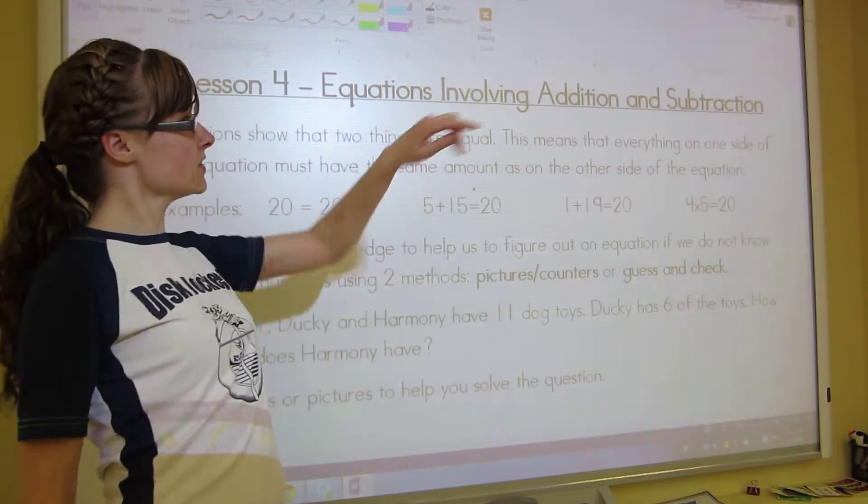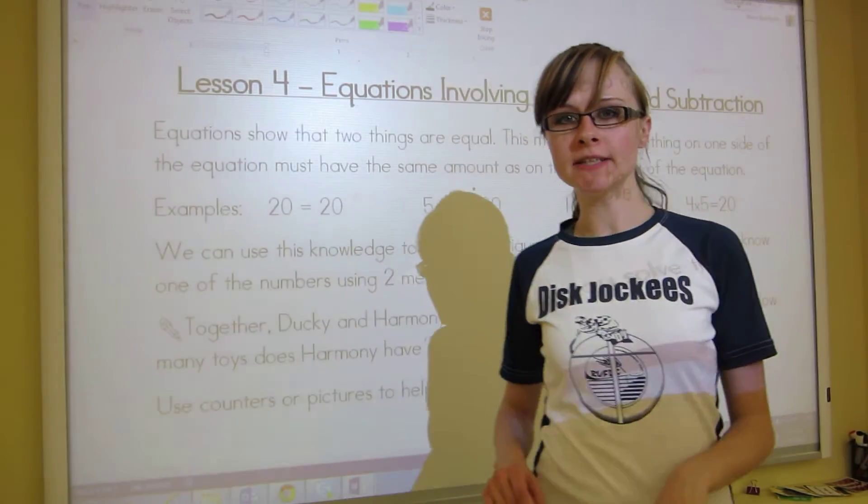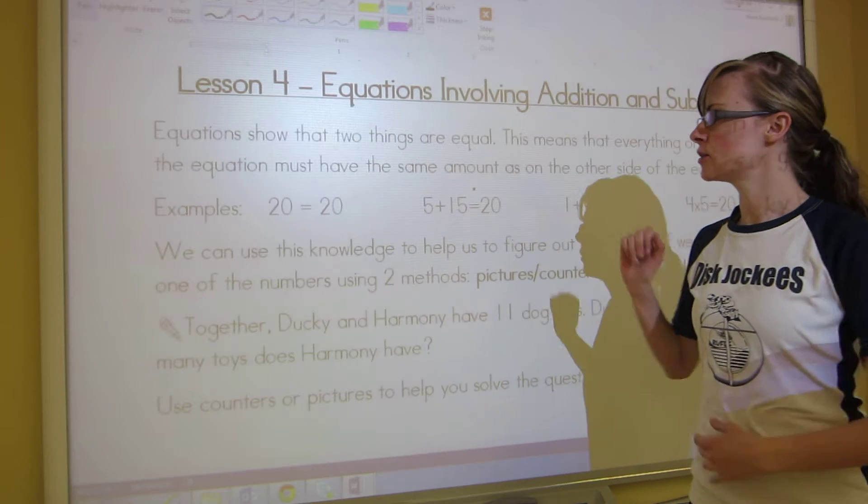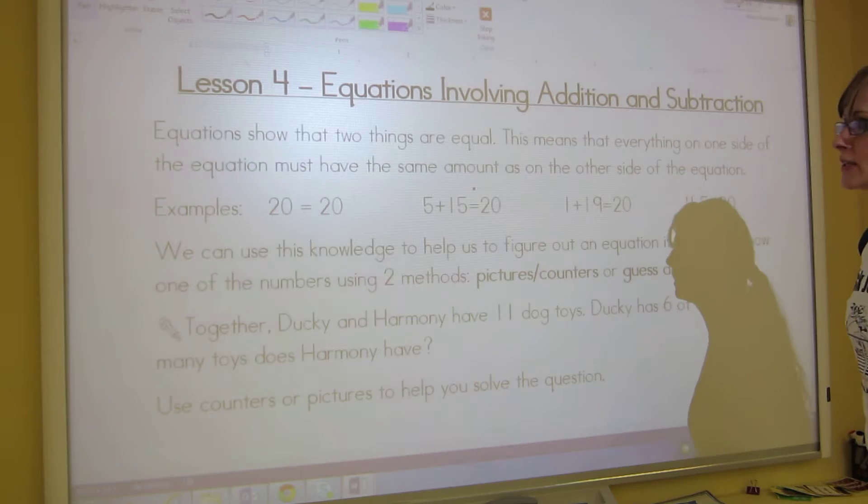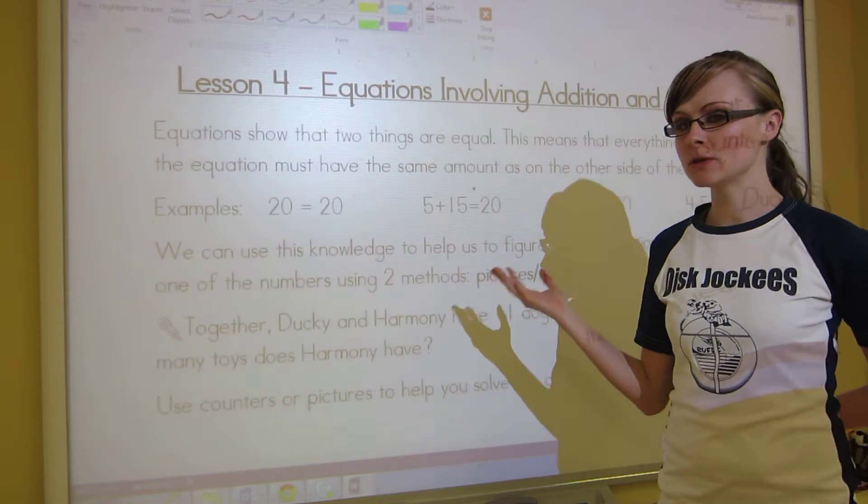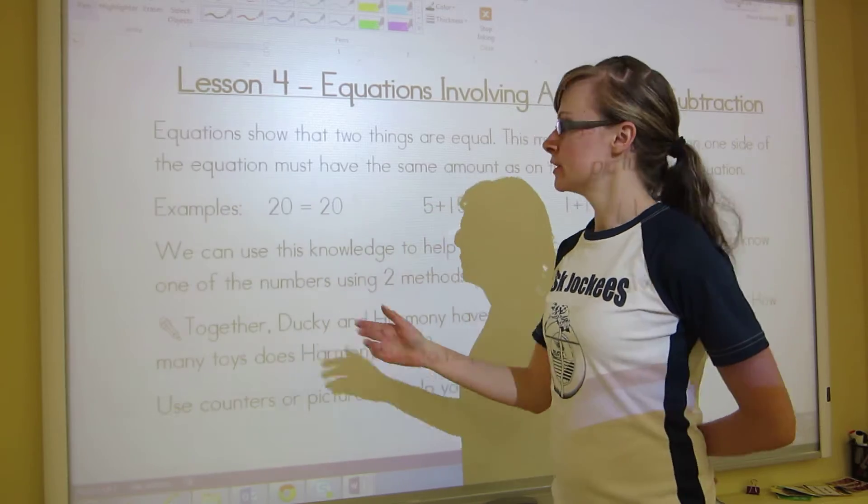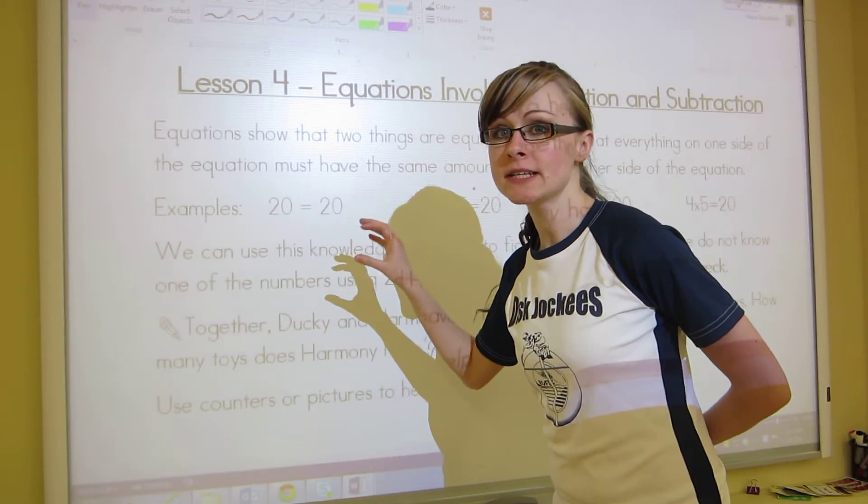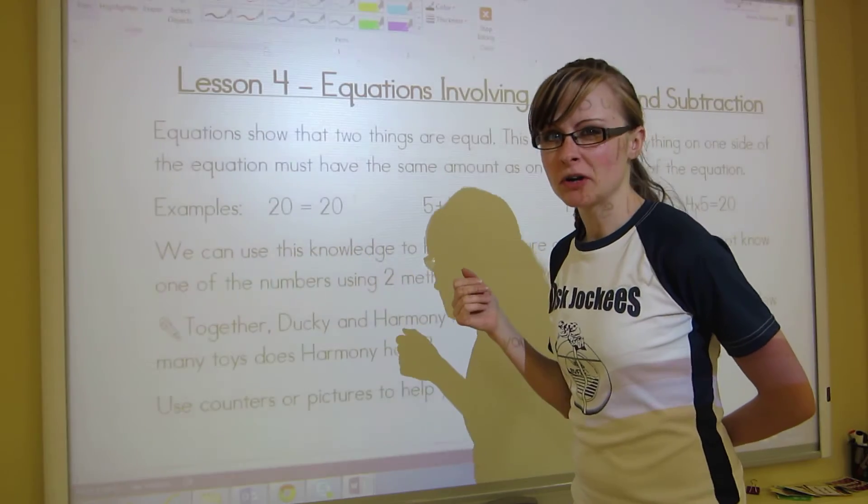This is a lesson on equations involving addition and subtraction. We're sort of switching gears here a little bit into solving problems using equations. Equations show that two things are equal. This means that everything on one side of the equation must have the same amount as on the other side of the equation. And then I have a bunch of examples. This is going to be the concept throughout this entire lesson, it's just going to get a little more complex.